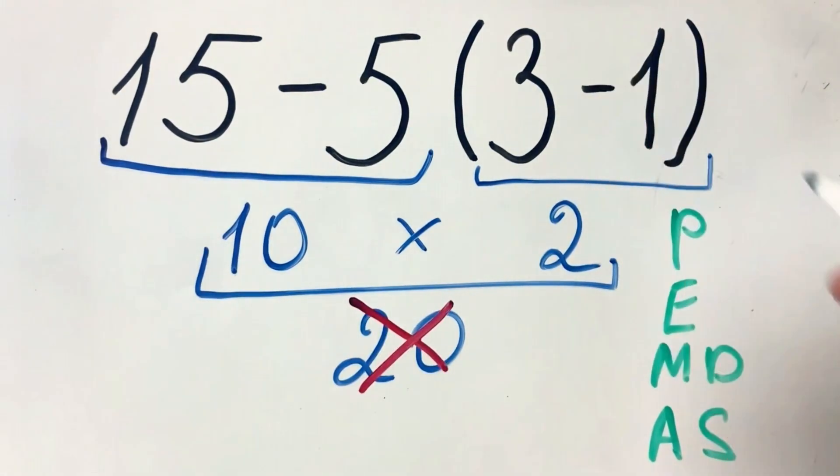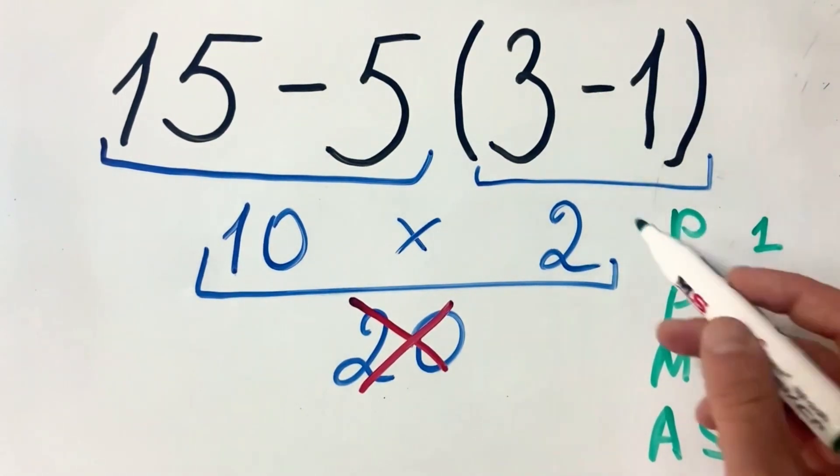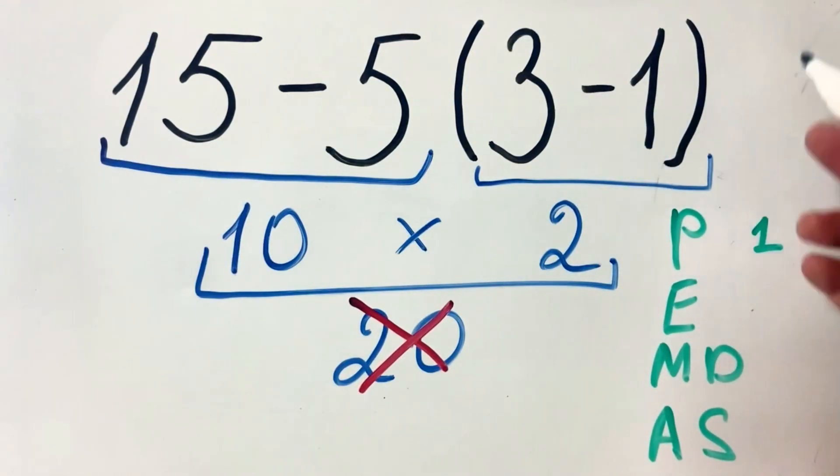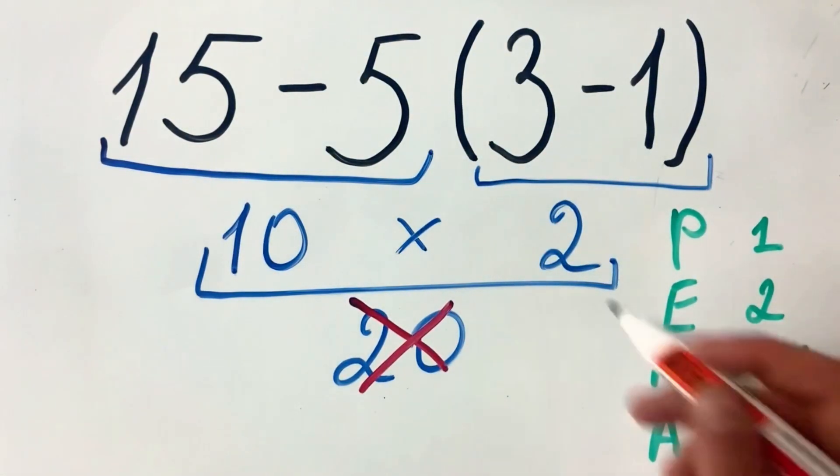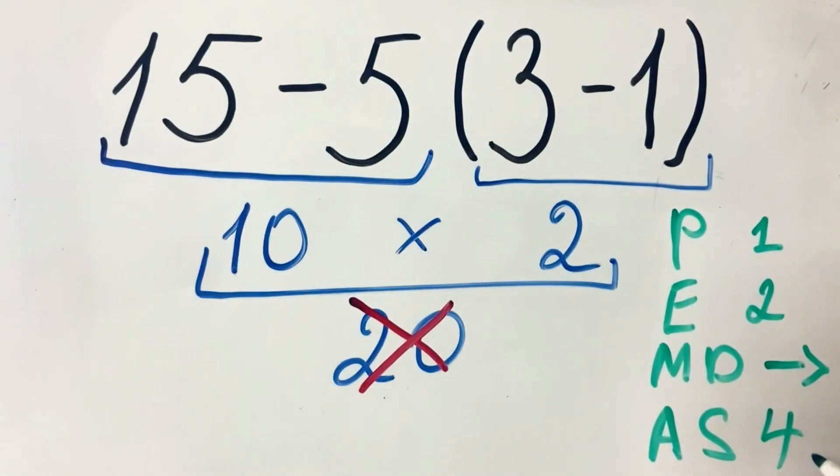We must first do what's inside the parentheses, so 3 minus 1. Then we do exponents if we have them - we don't have any here, but it's second. We do multiplication and division from left to right, so we have multiplication here. We'll do it in place, and the fourth is addition and subtraction.